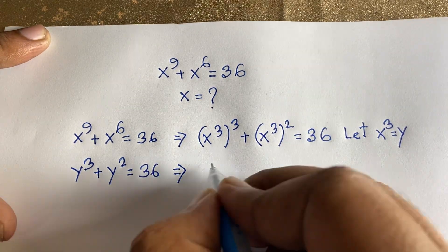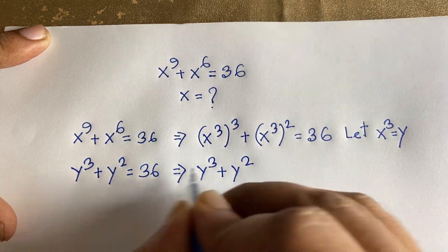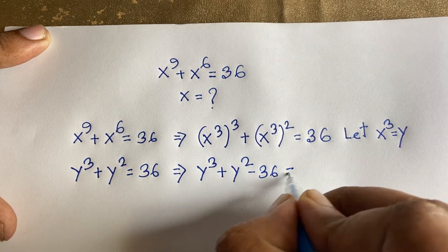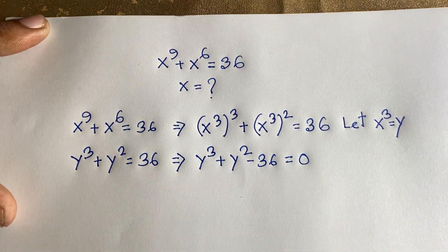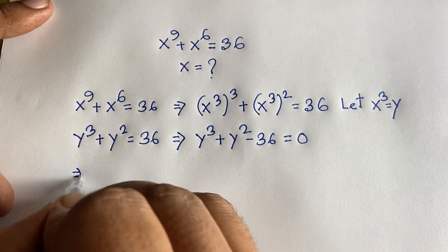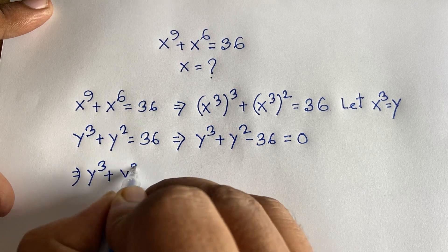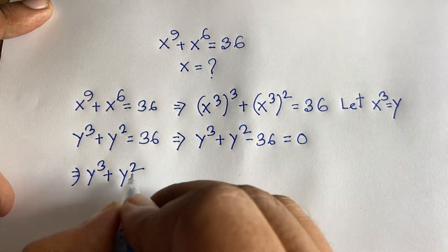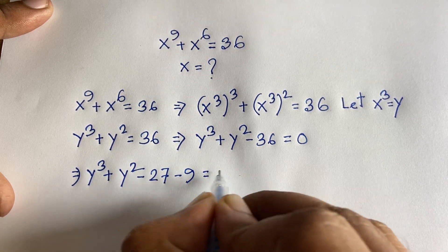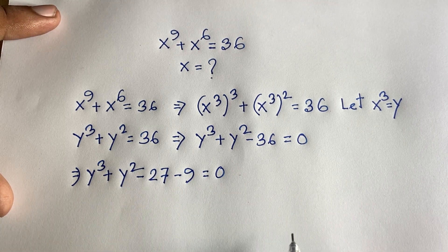Moving 36 to the left side gives us y³ + y² − 36 = 0. Now I split −36 as −27 − 9, since −27 + (−9) = −36.